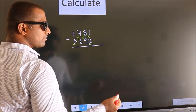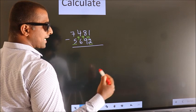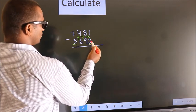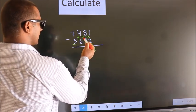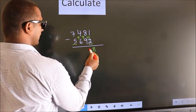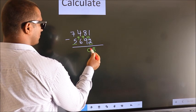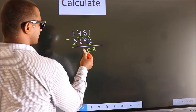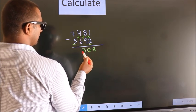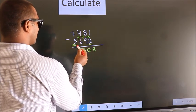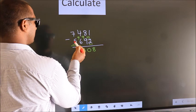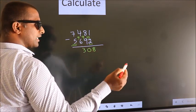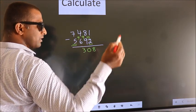Now we subtract: 10 minus 2 is 8, 9 minus 9 is 0, 9 minus 6 is 3. Now for the first digit we do 7 minus 5, we get 2.